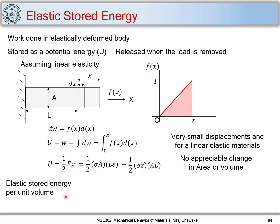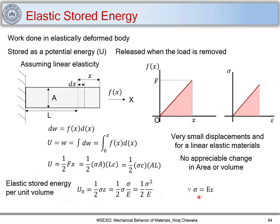Dividing by volume, we get the elastic stored energy per unit volume, u₀, which is the area under the stress-strain curve for very small strains: u₀ = ½σε. Using Hooke's law σ = Eε, we can substitute ε = σ/E to get u₀ = σ²/(2E), or alternatively replacing σ with Eε gives u₀ = ½Eε².